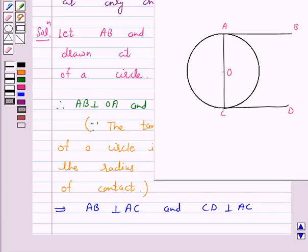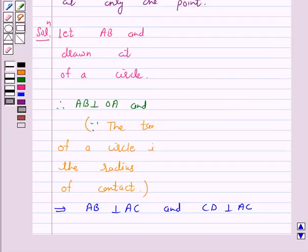Now, we know that two lines which are perpendicular to the same given line are parallel to each other. Therefore, AB is parallel to CD.